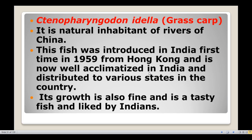Next is Ctenopharyngodon idella, commonly known as Grass Carp. It is a natural inhabitant of rivers of China. This fish was introduced in India for the first time in 1959 from Hong Kong and is now well acclimatized in India and distributed to various states across the country. It grows well and is a tasty fish liked by Indians.